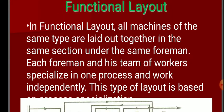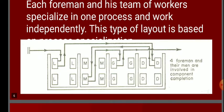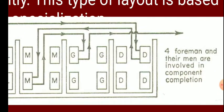Functional layout is based on process — that is, grouped by operation type. The operation is set up so that if you have a new operation, parts go through each operation in sequence. Once one operation is finished, you can see the parts move to the other operation. That is why multiple men are involved in completing each component.